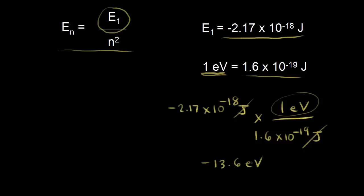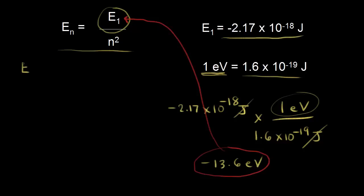That's the energy associated with an electron in the lowest energy level in hydrogen. Plugging that back into the equation, the energy at any energy level n is equal to E1, which is negative 13.6 electron volts, divided by n squared, where n is an integer — so one, two, three, and so on.